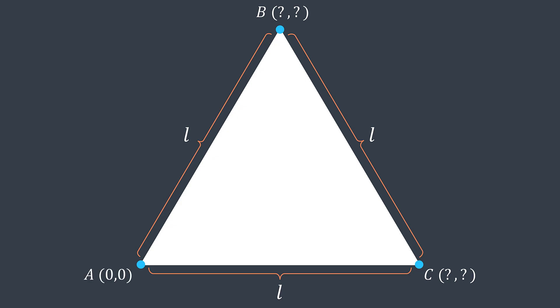For A you can just put it at zero zero, it's fine. For C, we can put it at L zero, we'll get a distance of L between A and C.